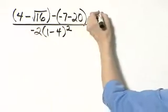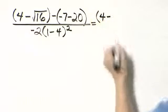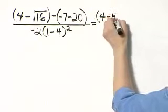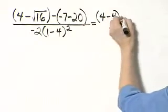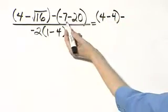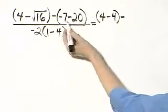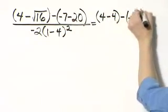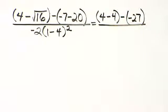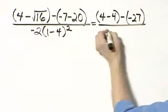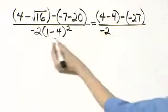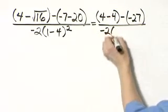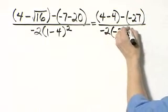Here I'll have 4 minus — what is the square root of 16? The square root of 16 is 4 — and then minus. Here I have negative 7 minus 20; negative 7 minus 20, that's negative 27. And then let's work in the denominator also. I have negative 2, and then within this set of parentheses, 1 minus 4, that's negative 3. And that is squared.